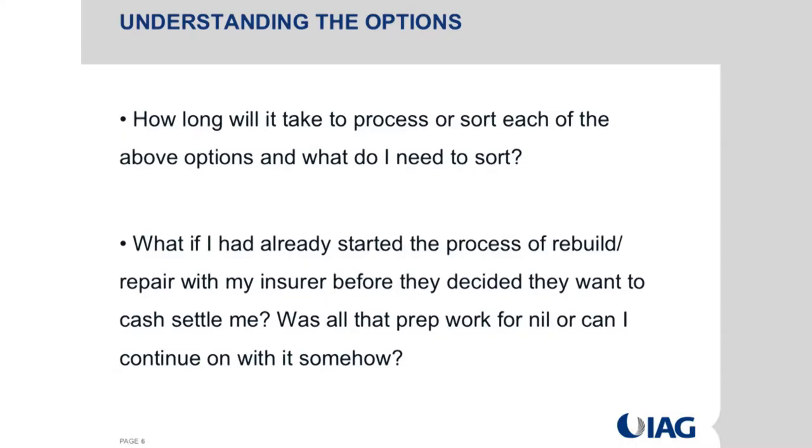The outcome depends on what you choose to do. If you choose to build a home, on average through our program it's taking about 47 weeks. If you buy an existing property, obviously it's a lot quicker. If you've already started the process, the answer is no, you don't have to start again. If you're already speaking to a builder about designs, and your insurer starts to speak to you about cash settlement, you could generally get the builder to do a fixed sum price and cash settle with your insurer on that fixed sum price. The money goes to you or your bank, and your bank draws down the payments as you go through the build process.